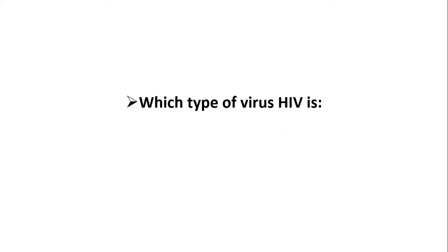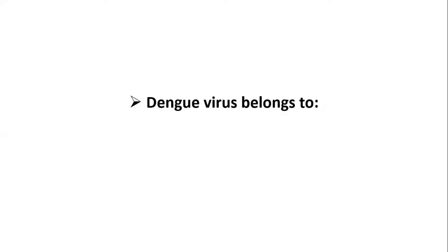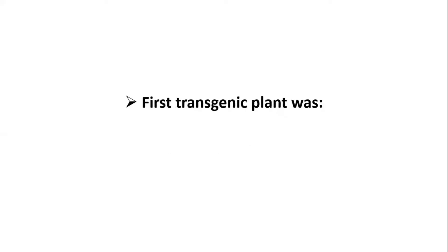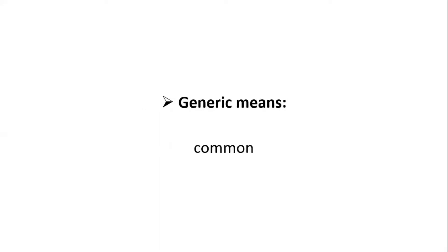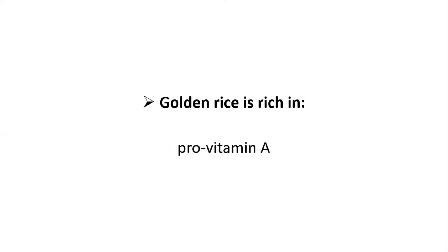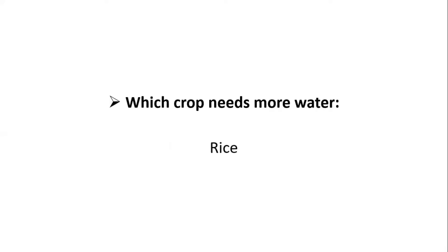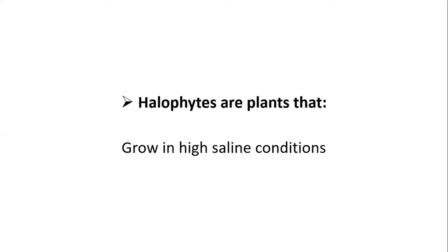Which type of virus is HIV? Retrovirus. Dengue virus belongs to Flaviviridae class. First transgenic plant was tobacco. Generic means common. Golden rice is rich in pro-vitamin A. Which crop needs more water? Rice.